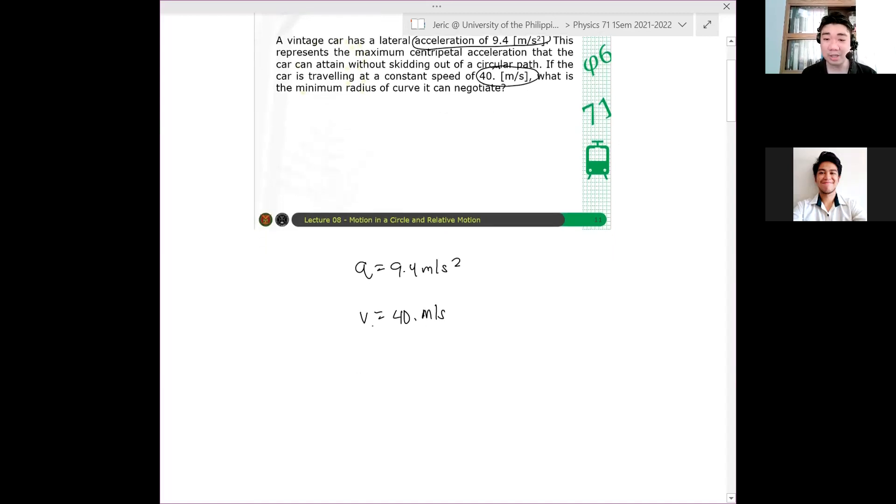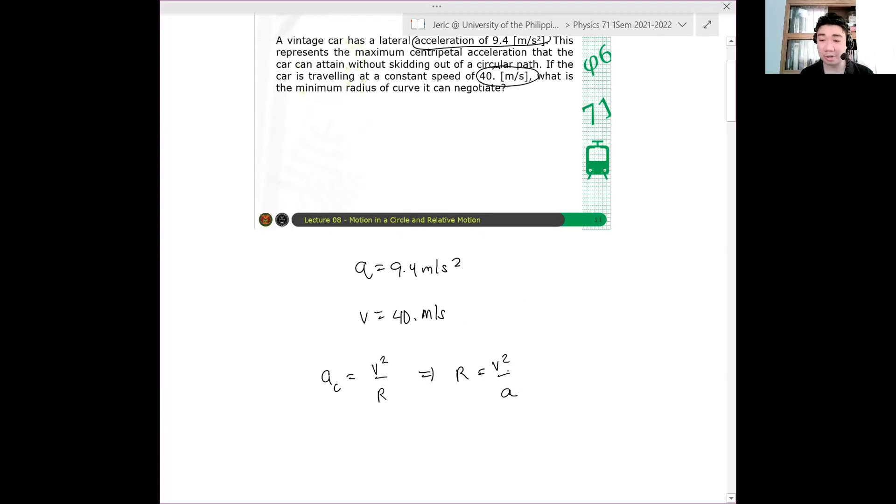So thus, how can we determine the radius of the curve? Of course, we'll just use our formula for centripetal acceleration, which is V squared over R. Which means that R is simply V squared over A. And then if we substitute that, this is simply 40.0 meters per second quantity squared over the acceleration, which is 9.4 meters per second squared. And therefore, the radius of the curve is about 170 meters.